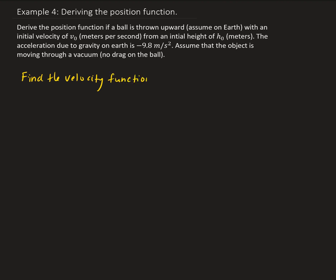We're going to take the integral of negative 9.8, so v of t will be equal to the integral of negative 9.8 dt. This gives us v of t equals negative 9.8t plus a constant. We need to use our initial value to find this constant.